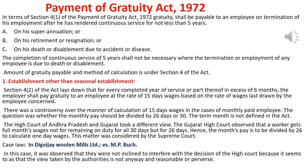How is the Gratuity calculated? In terms of Section 4, clause 1 of the Payment of Gratuity Act 1972, Gratuity shall be payable to an employee on termination of his employment after he has rendered continuous service of not less than 5 years — on his superannuation, retirement, resignation, or on his death or disablement due to accident or disease.